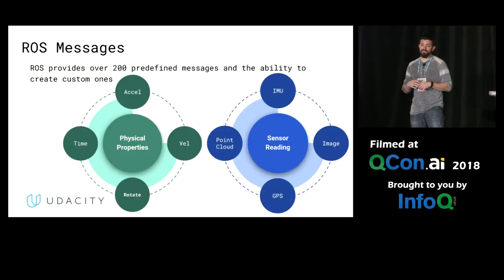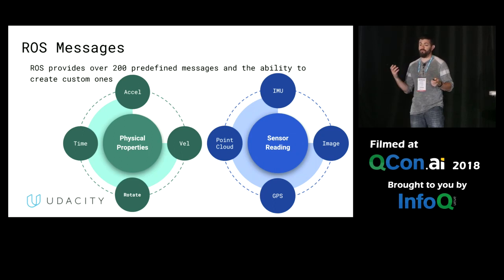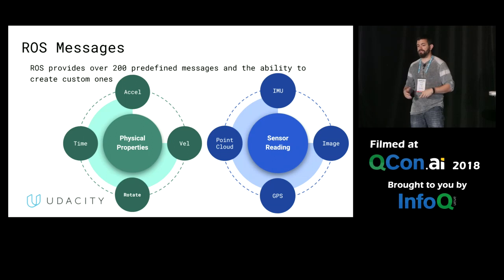And then you have ROS messages. There are over 200 different predefined message types in ROS, and you can also create your own, so you don't have to do everything from scratch. For example, point cloud data when you're using a LiDAR — having to define that message format on your own can take time. ROS gives you ways to handle that.